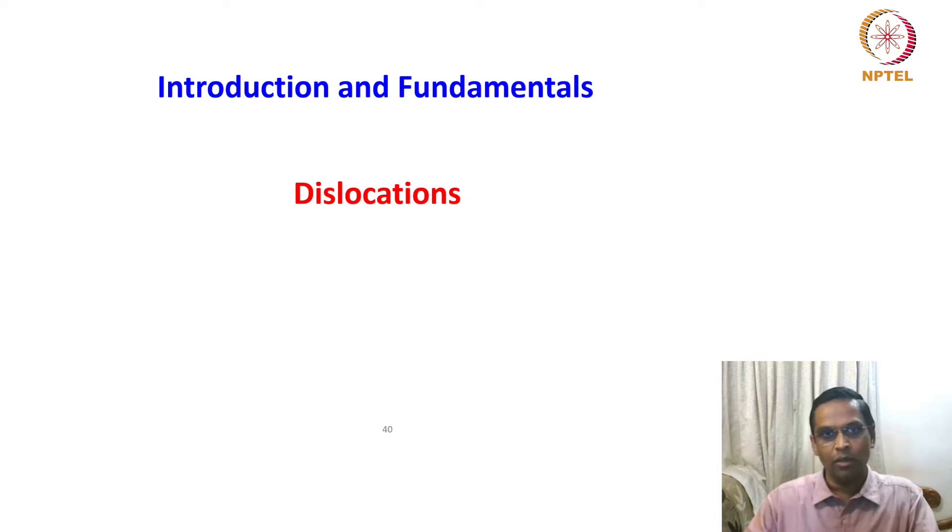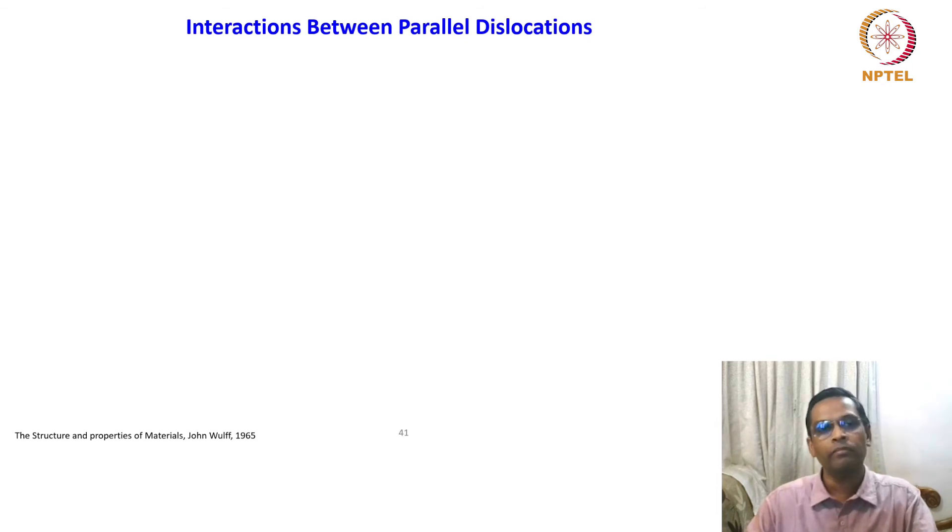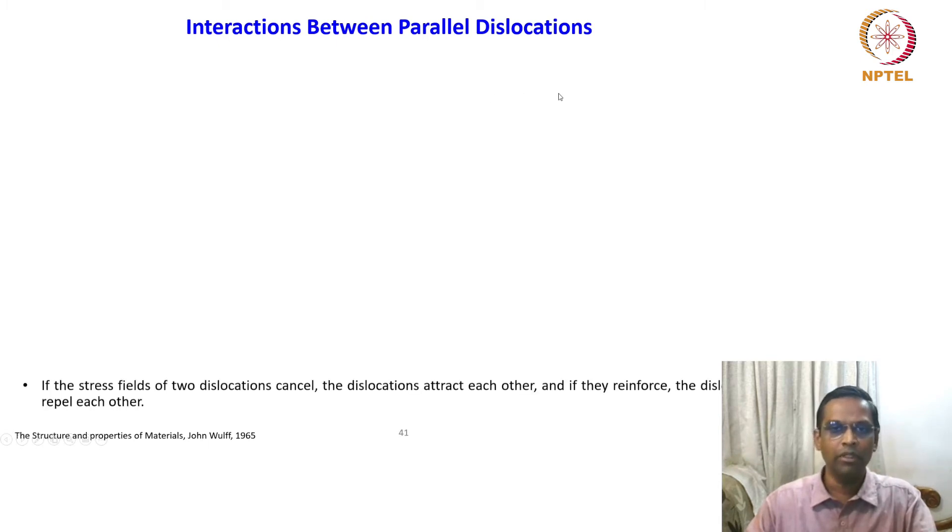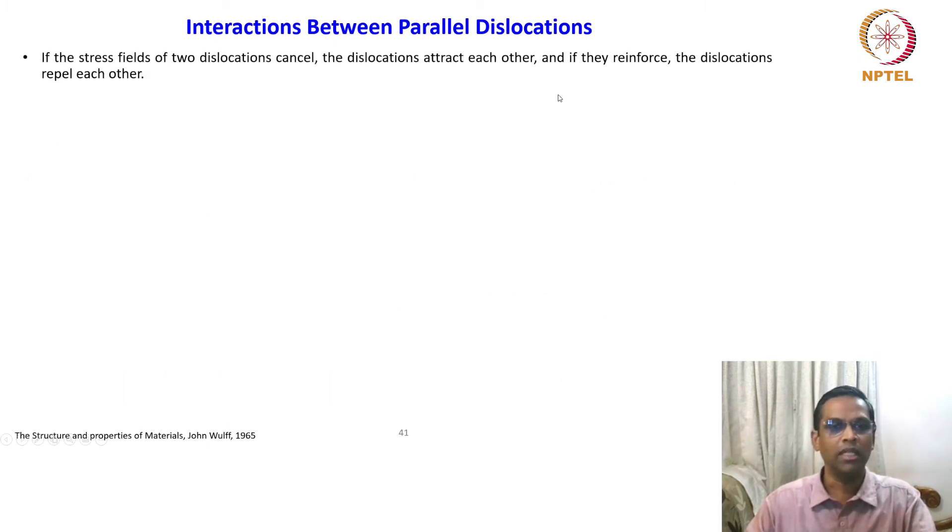We also started looking at interactions of two dislocations and just looked at how two dislocations of similar sign will react with each other or opposite sign. We are going to continue that idea today on interactions between two parallel dislocations. We will just look at the concepts which we have already seen in the last class. It will be slightly redundant here but it's still okay as a kind of revision again.